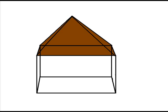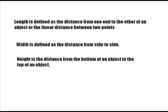Length is defined as the distance from one end to the other of an object, or the linear distance between two points. Width is defined as the distance from side to side, and height is the distance from the bottom of an object to the top of an object.